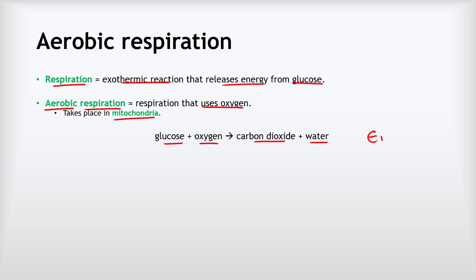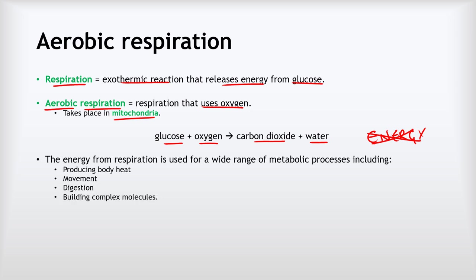Although this reaction releases energy, energy is not written anywhere on the equation because energy is not a chemical and this is a chemical equation. The energy released from respiration is used for a wide range of metabolic processes — that means chemical reactions inside the body — including producing heat, enabling us to move, powering our digestion, and building complex molecules needed for growth and repair.